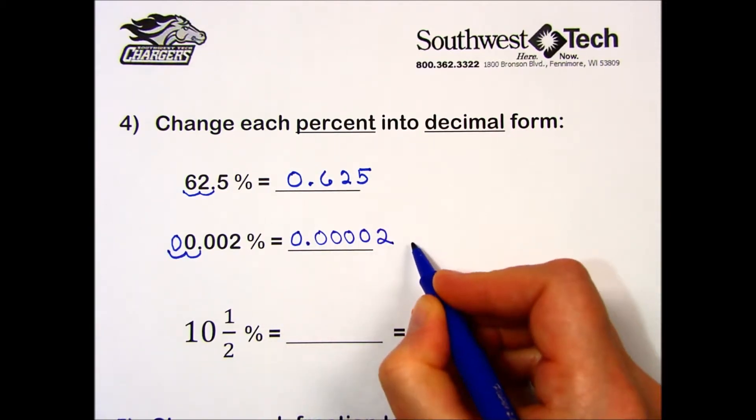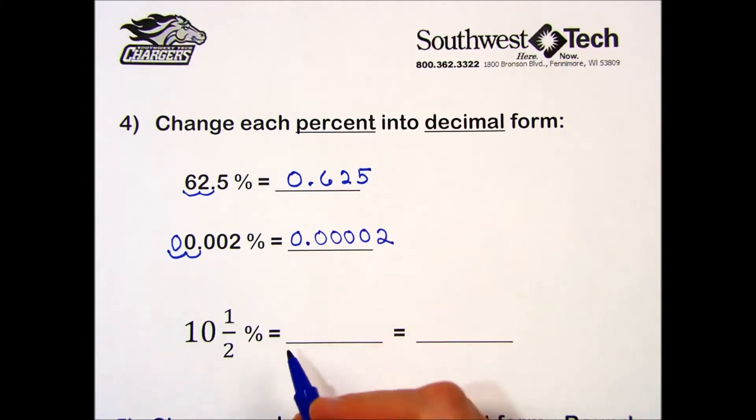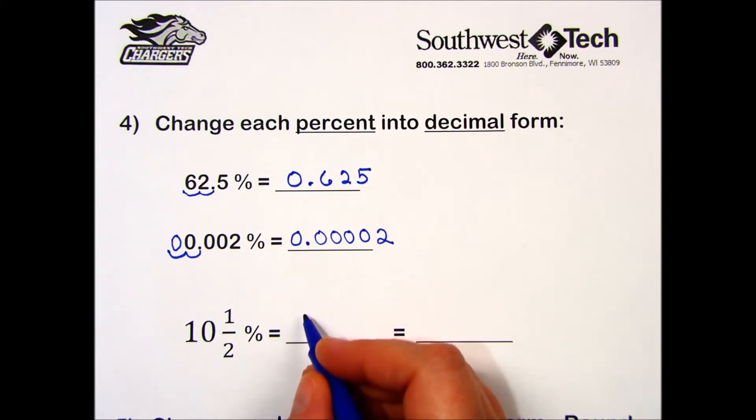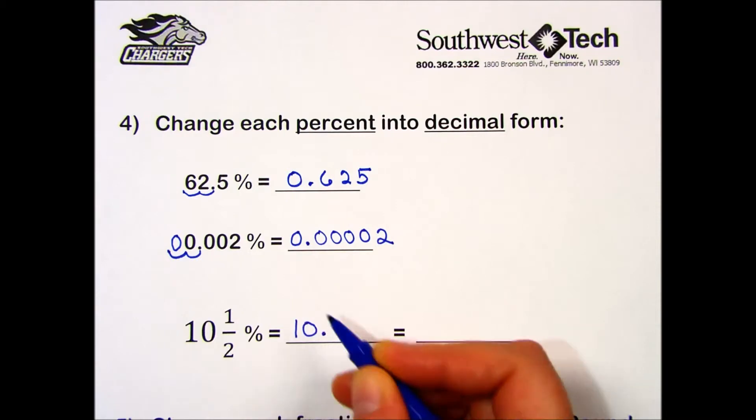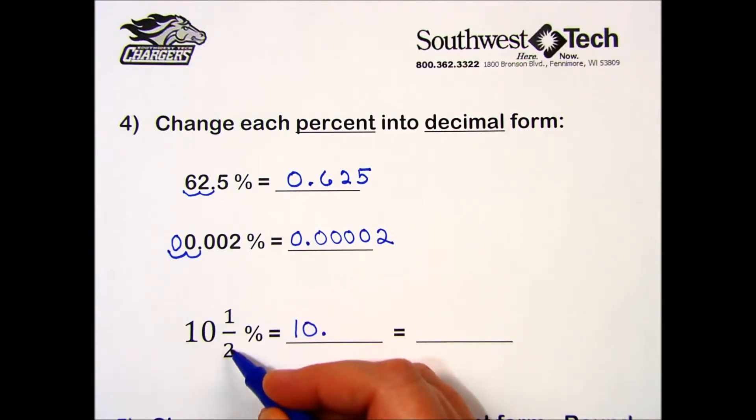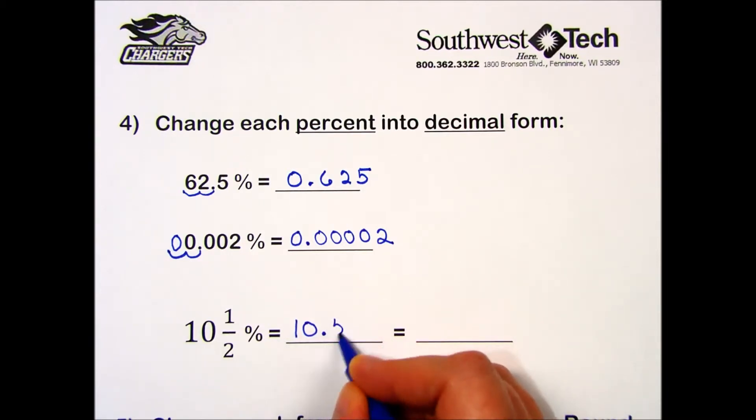In the third case I start with a mixed number, 10½ percent. My first step is to change this into a decimal. Ten and one-half, if I divide that on my calculator, I find that it is 0.5. Ten and one-half becomes 10.5, and I still have my percent symbol.